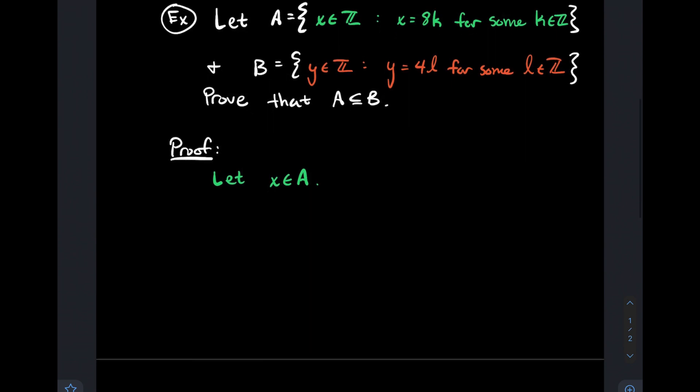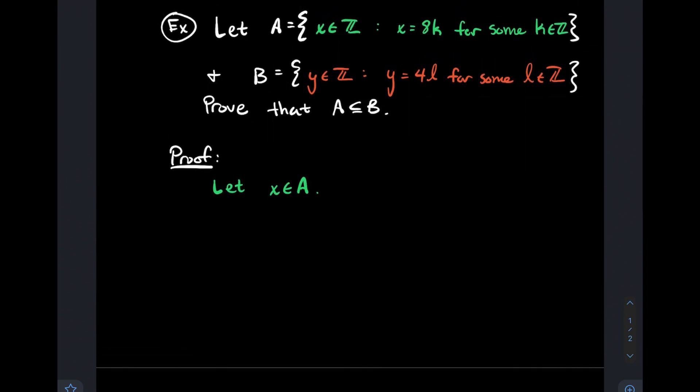Here's the proof. Just like we said, we'd start: let X be an element of A. What that allows me to do is get a form down for what X looks like. It's a multiple of eight. By the definition above, that means there exists some integer k such that X is equal to 8k.